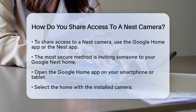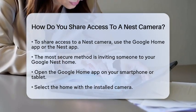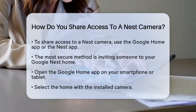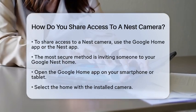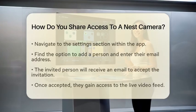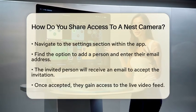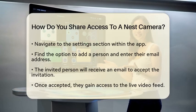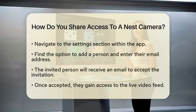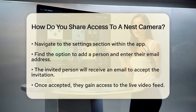First, open the Google Home app on your smartphone or tablet. Once you are in the app, select the home where your camera is installed. Next, navigate to the settings section. Here, you will find an option to add a person.